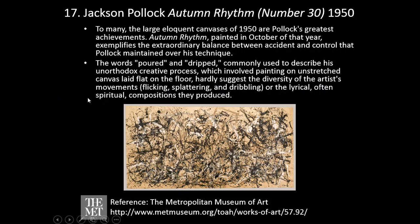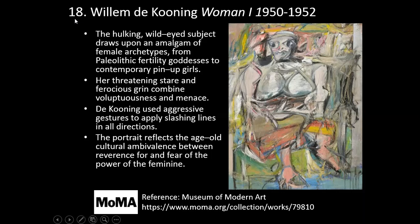Number eighteen — Willem de Kooning, Woman 1, 1950 to 1952. The hulking, wild-eyed subject draws upon an amalgam of female archetypes, from Paleolithic fertility goddess to contemporary pin-up girls. Her threatening stare and ferocious grin combine voluptuousness and menace. De Kooning used aggressive gestures to apply slashing lines in all directions. The portrait reflects the age-old cultural ambivalence between reverence for and fear of the power of the feminine.